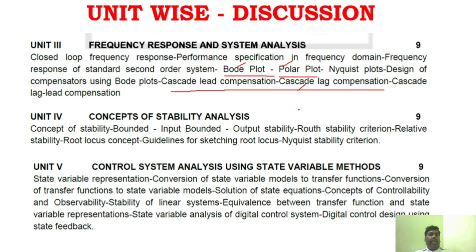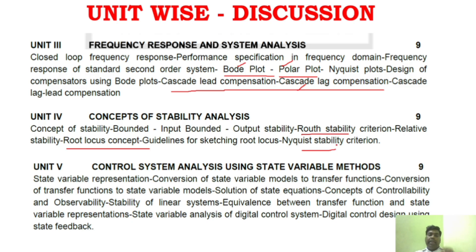Unit 4 has three important areas: root locus — a very very important concept — root stability criterion, and Nyquist stability criterion. If you study root locus and root stability, you will be well covered for Unit 4.